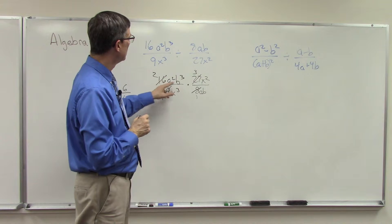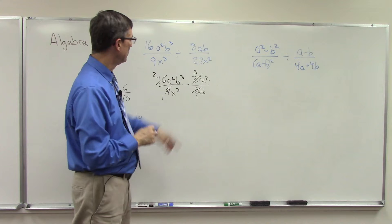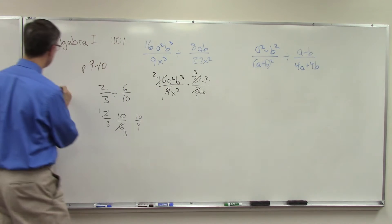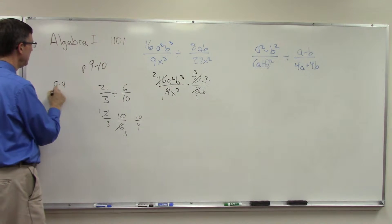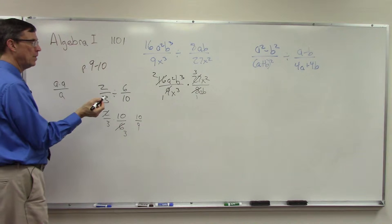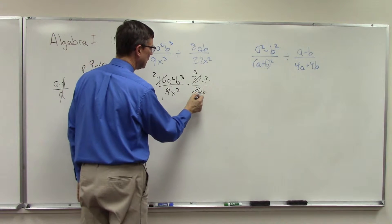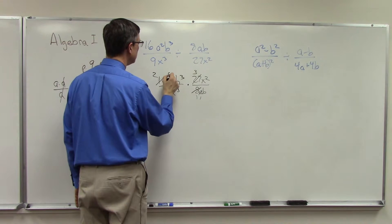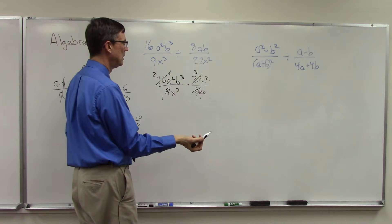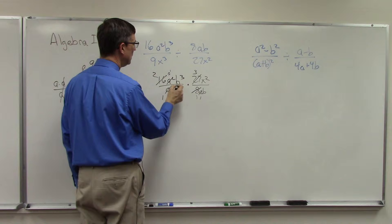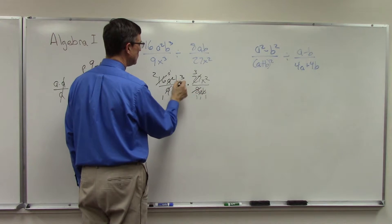Now let's see about canceling the a's. Remember, we have a² up here and I have one a here, so it's kind of like saying a times a on the top and I have an a on the bottom. So one of these will cancel out, and this becomes just a to the 1.